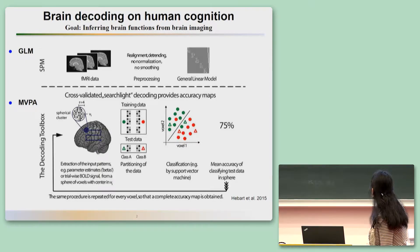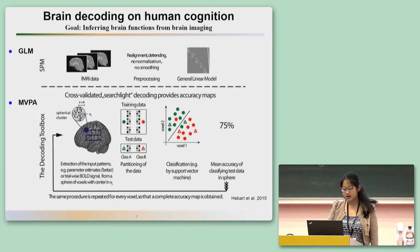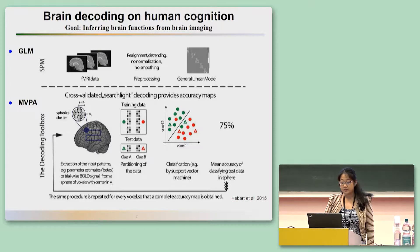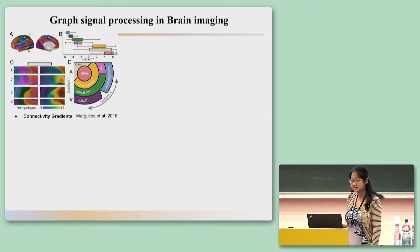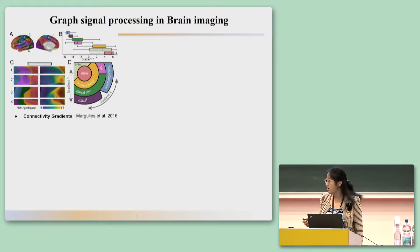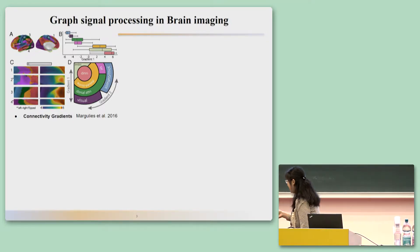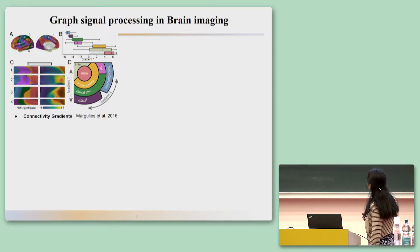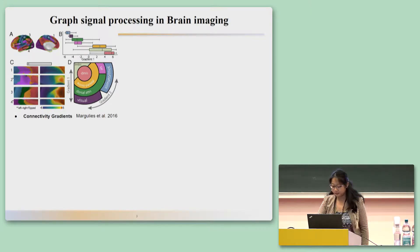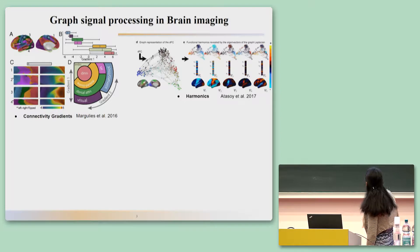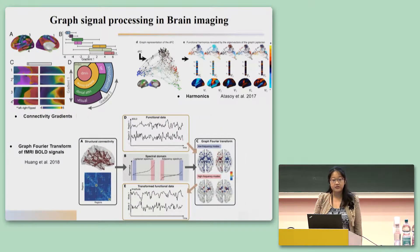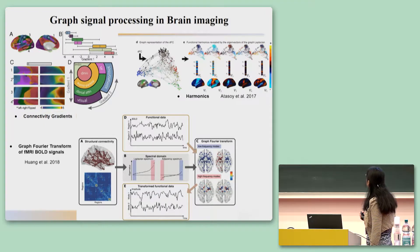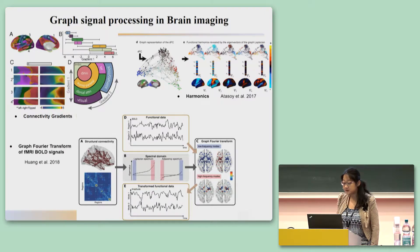We try to use a different method that merges network neuroscience with neural networks — specifically graph signal processing. The graph Laplacian method has been widely used in neuroscience. For instance, it has been used to generate connectivity gradients and to get harmonics of brain connectomes. Additionally, we can apply the graph Fourier transform directly to functional imaging data, transferring it into the spectral domain, where different frequency modes can associate with different behaviors.